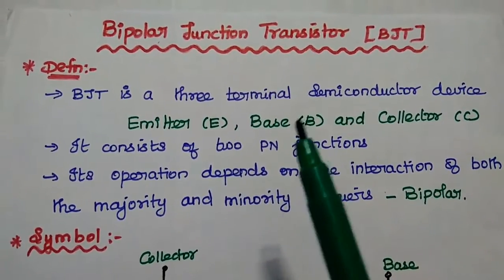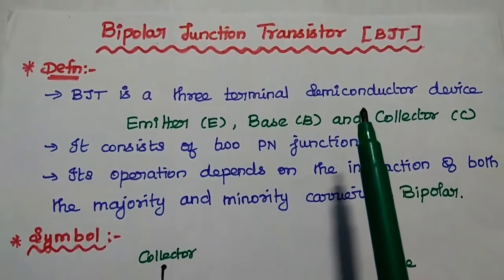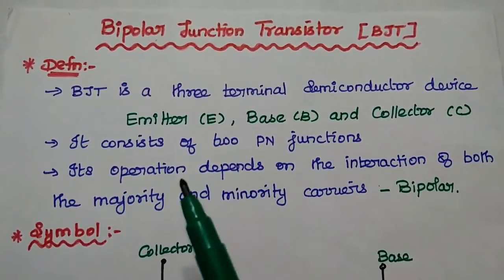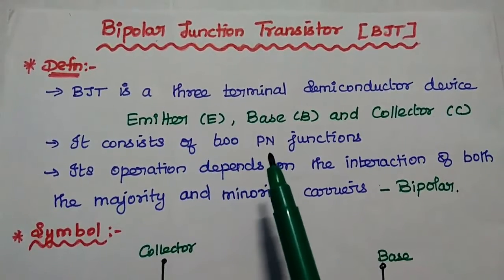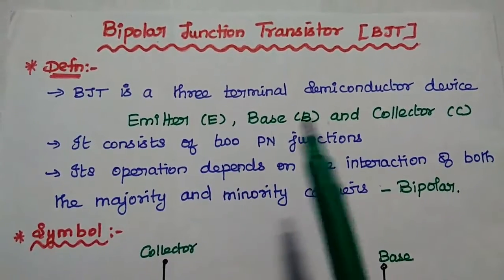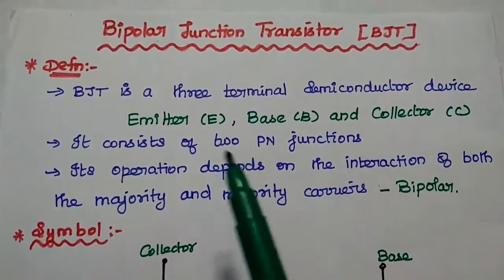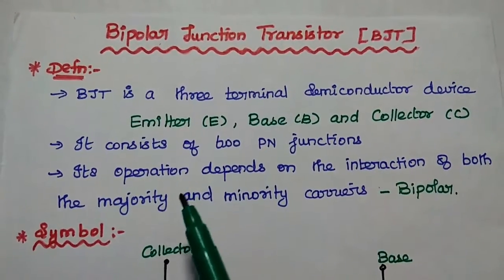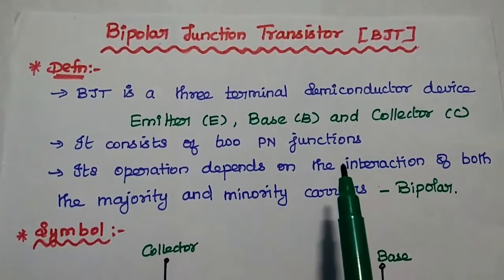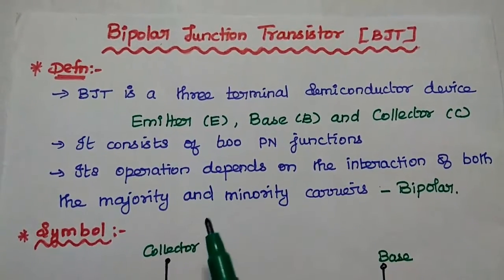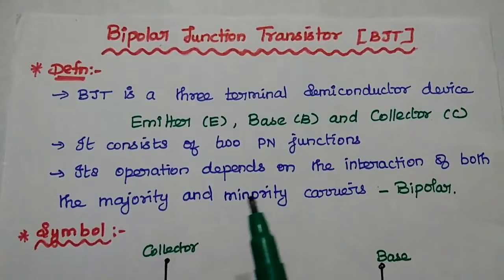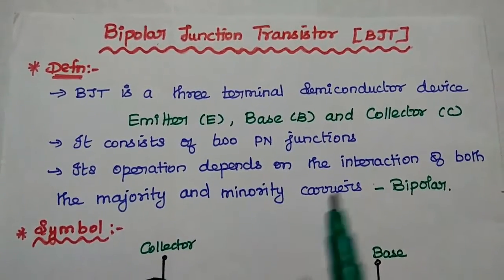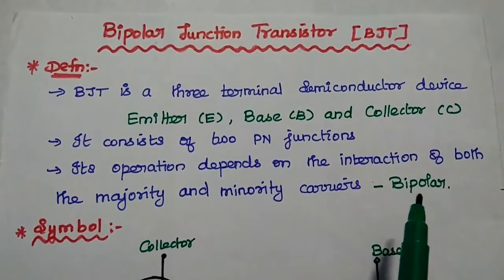Now we are going to discuss bipolar junction transistor and its working principle in detail. Let's start with the definition of BJT. It is a three-terminal semiconductor device. The three terminals are emitter, base, and collector. It has two PN junctions in its structure. In this transistor, the current conduction is due to both the majority and minority carriers. Hence, it is called as bipolar.